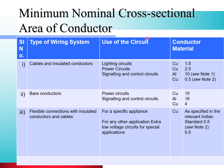For bare conductors used in power circuits, copper material requires 10 mm². For signaling and control circuits, aluminum requires 16 mm², and copper requires 4 mm². For flexible connections with insulated conductors and cables: for specific appliances using copper, the area is 0.5 mm². For extra low voltage circuits and special applications, copper material requires 0.5 mm².